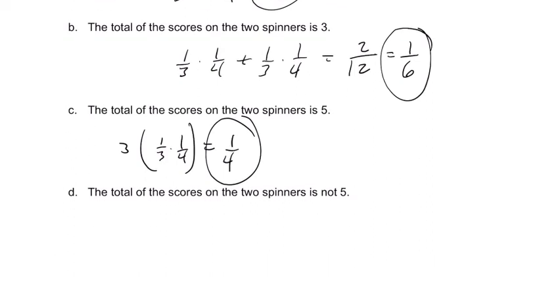The total of the scores in the two spinners is not 5. So we know that this is the probability that they are 5. So let's take the complement of that, and we get 3/4. All right, hope this helped.